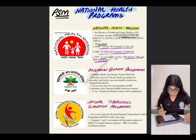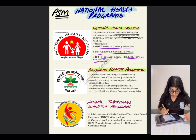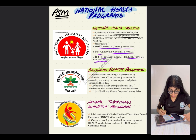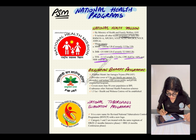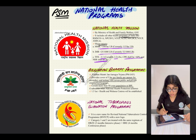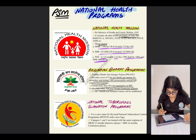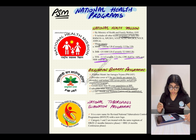The first national health program is Ayushman Bharat, also known under the umbrella term Pradhan Mantri Jan Arogya Yojana. It provides a cover of 5 lakh per family per annum for secondary and tertiary care across public and private empaneled hospitals. It covers more than 50 crore population below the poverty line, subsumes other national health protection schemes, and 1.5 lakh-plus health and wellness centers will be established under this program.